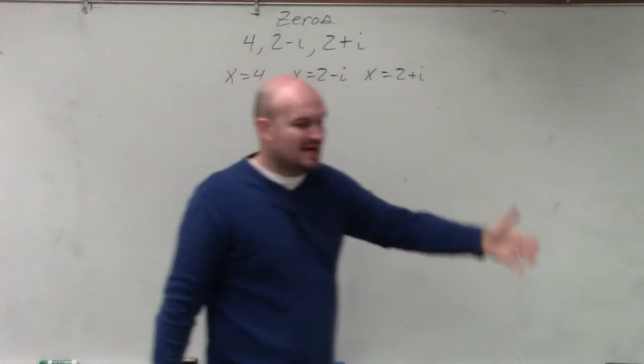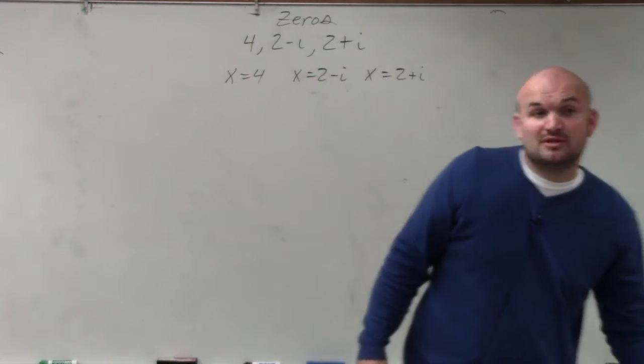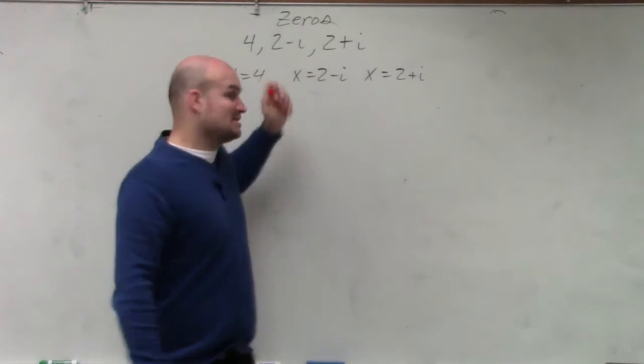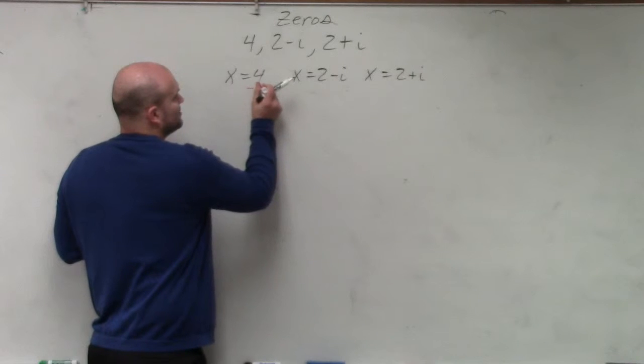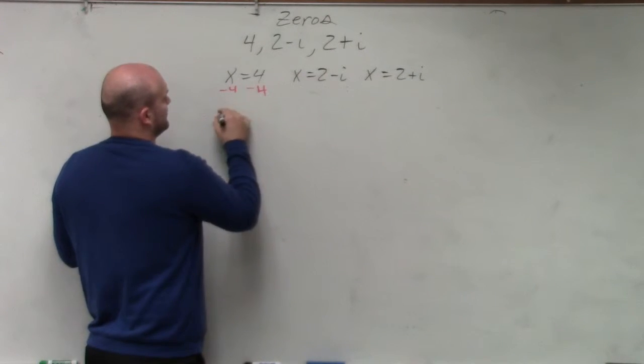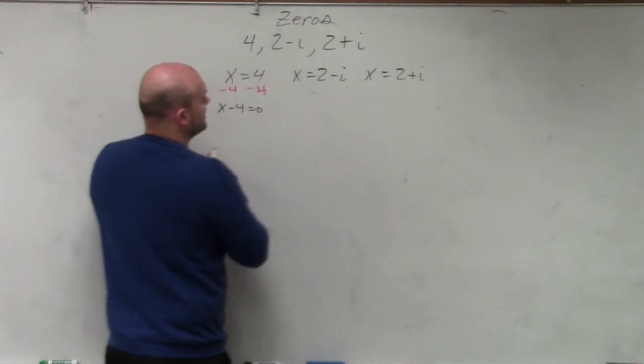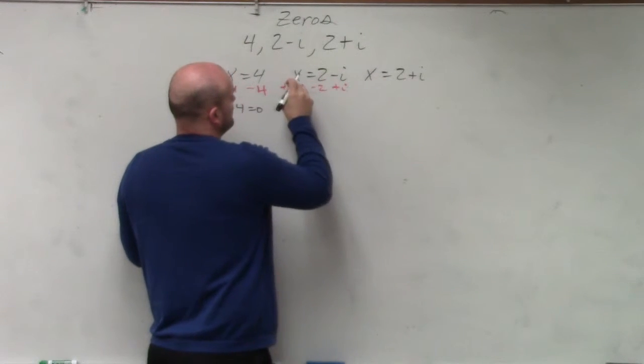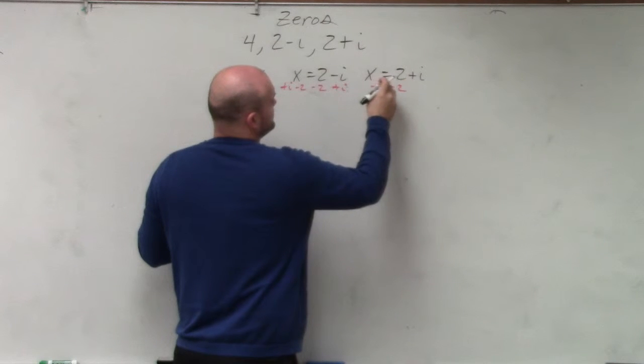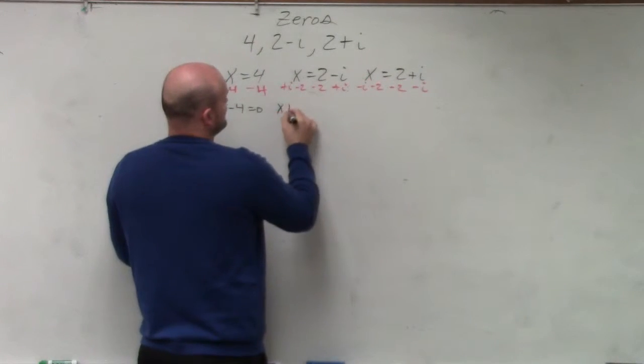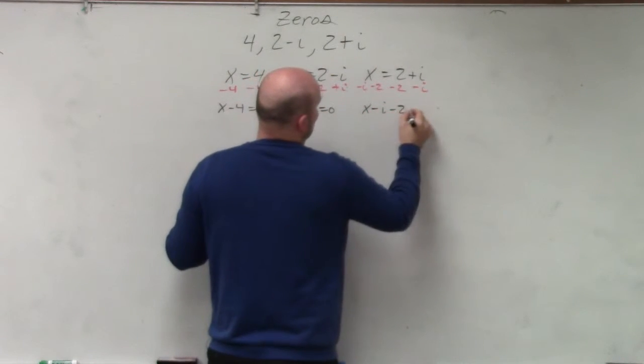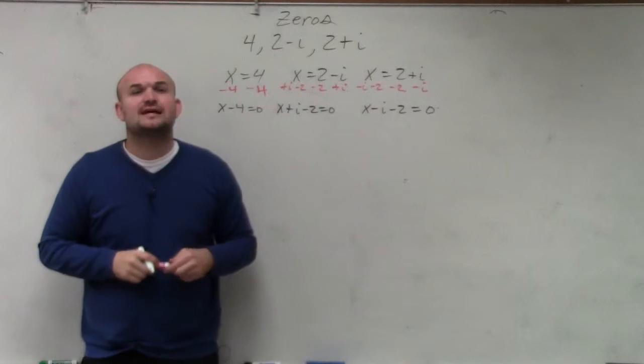Now, we set them equal to x. Well, this one's a little bit different, because now you have to get both of these off that side. So here's what you're more familiar with: x minus 4 equals 0. But here, you have to subtract a 2 and add an i. Here, you have to subtract a 2 and subtract an i. So therefore, you're left with x plus i minus 2 equals 0, x minus i minus 2 equals 0. Does everybody see what I did?